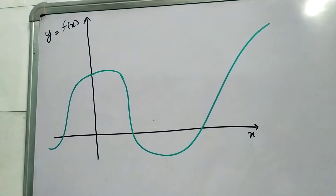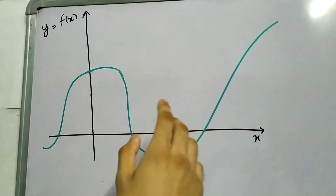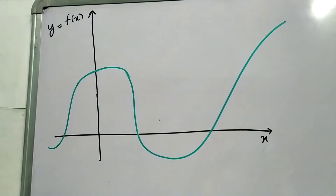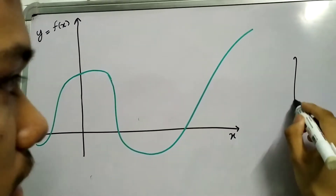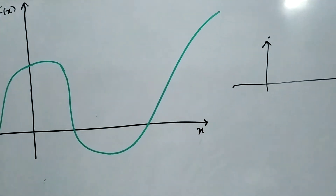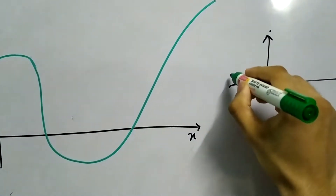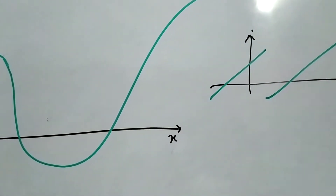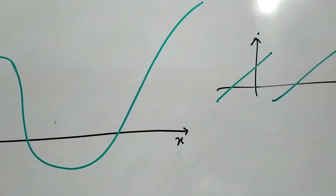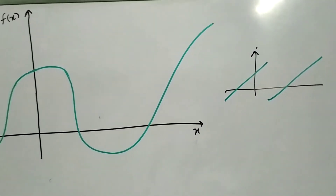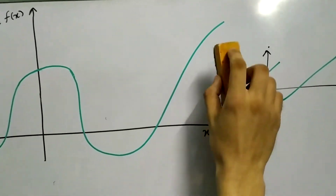There are no jumps. For example, something like this — the graph goes like this, and then it suddenly goes like this. No, not any jumps. The function is continuous.